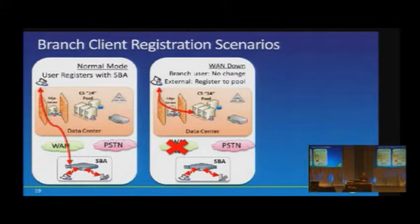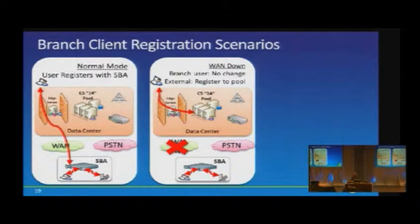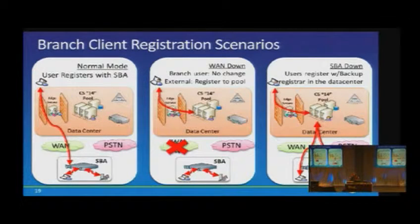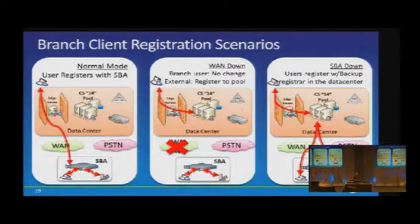If the SBA itself goes down, clients — both in the branch and from the internet — connect back to their backup pool in the central location and get full IM, presence, conferencing, and voice functionality. If both the SBA and WAN are down, clients cannot connect unless they have a path through the internet to the central site. For new clients arriving at a branch during a WAN outage, if you've configured DHCP option 120, it can provide the SBA FQDN, allowing the client to register against the SBA without needing local DNS services.